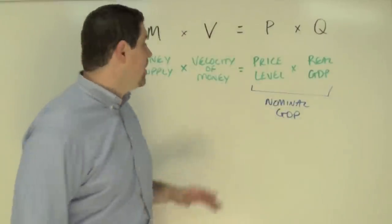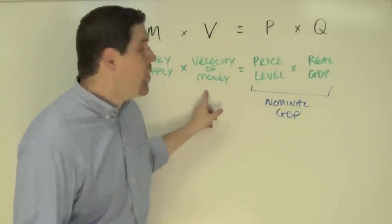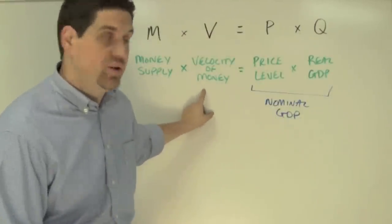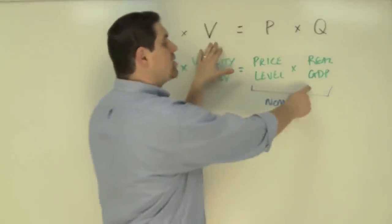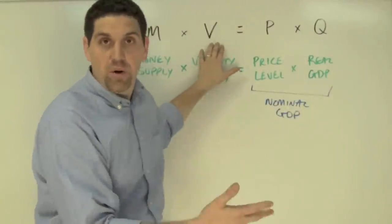Let's assume for a second that the velocity of money is just constant. So the amount people spend and re-spend of money in an economy doesn't really change much. Let's also assume the real GDP is constant because that's based on what we can produce.